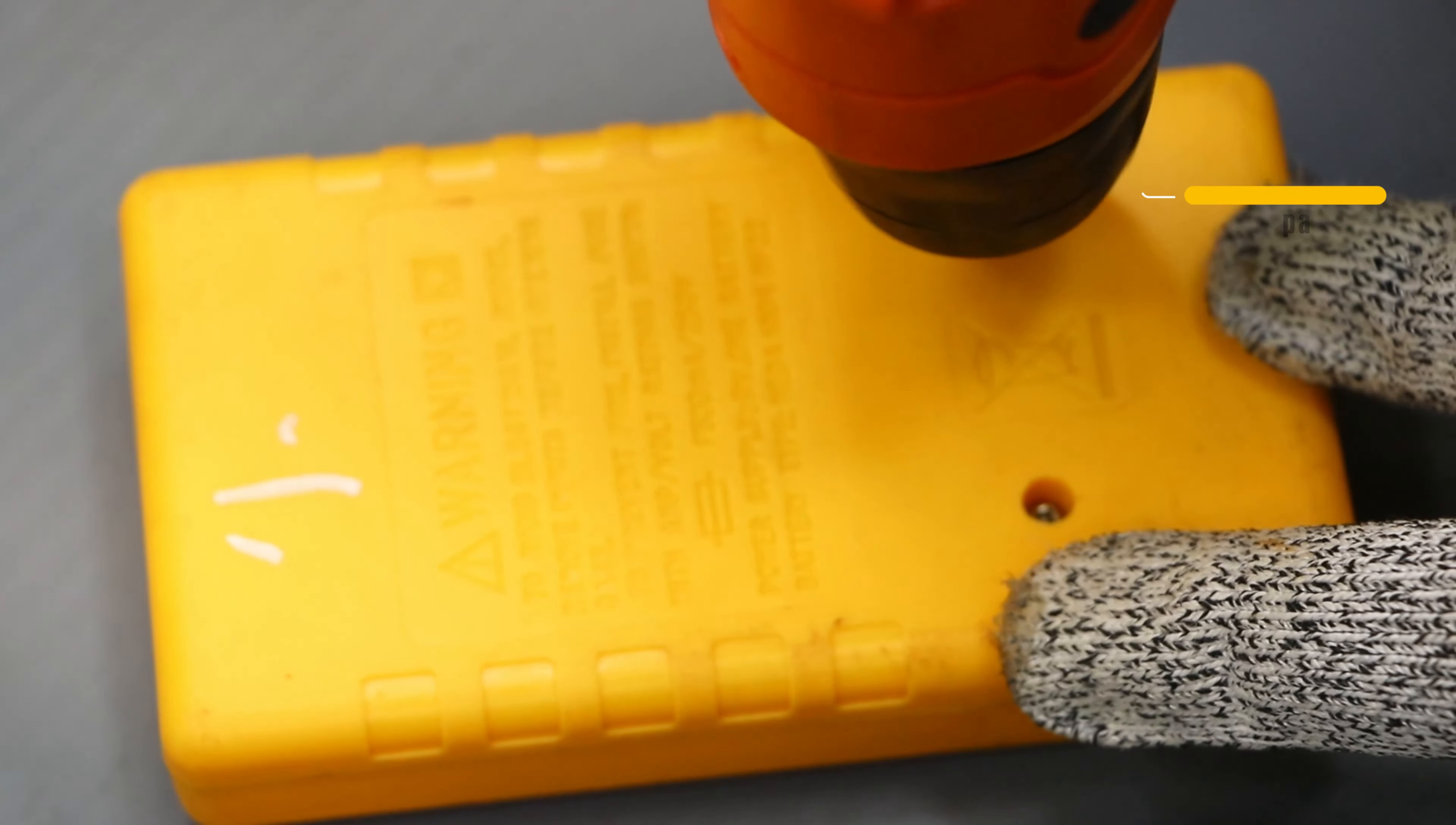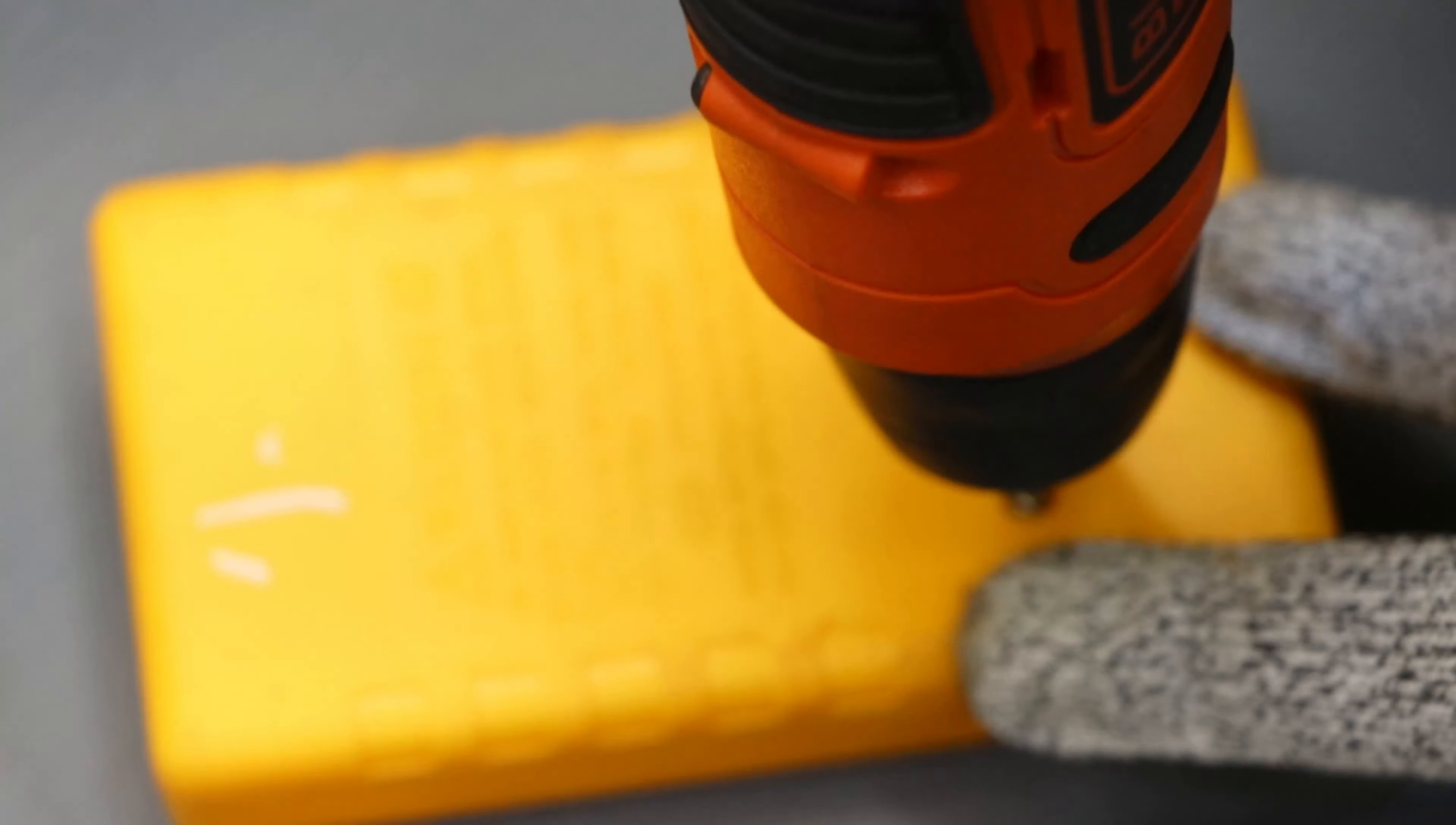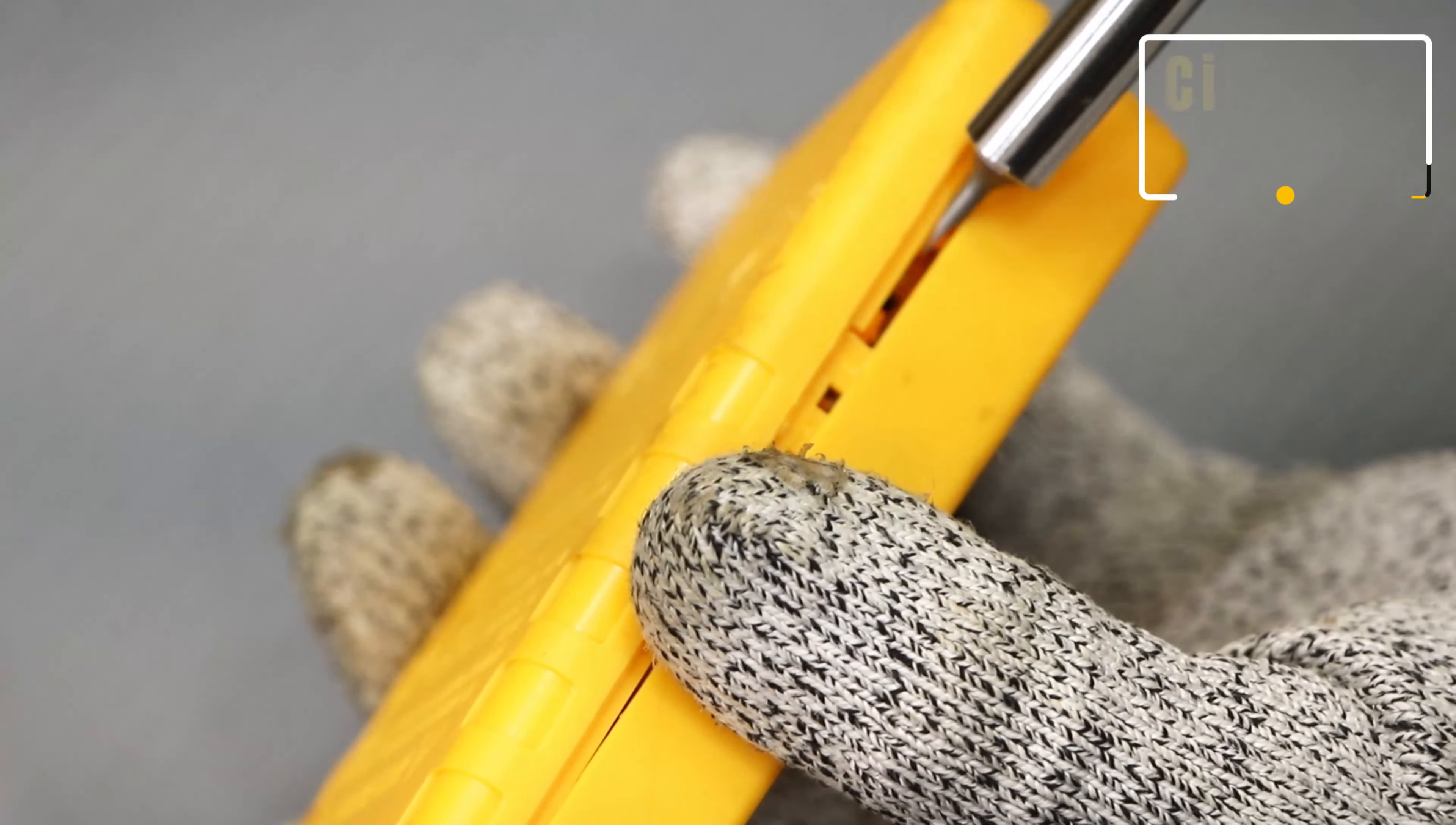These two screws, just open them. I'm using a hand drill, this is a chargeable hand drill. Actually you can use a screwdriver as well. This is the very first step. Now the second step is you can use some sharp object or you can say thin object to open the back cover of this multimeter.